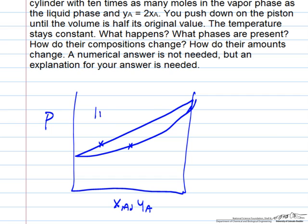It says we're at a point where yA is twice xA. So here is liquid, low pressure is vapor, and the yA value—since this plot corresponds to pressure versus yA and pressure versus xA—I picked a point where yA is about twice xA.